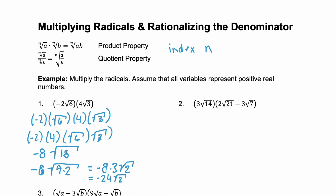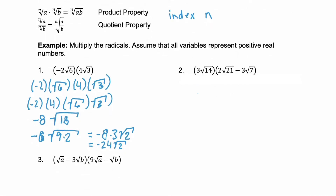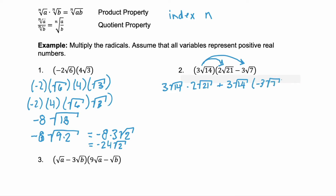Now look at example 2 where we have a monomial times a binomial — one term times two terms. We're going to distribute 3 times the square root of 14 to each of these two terms. So we have 3 square root of 14 times 2 square root of 21, plus 3 square root of 14 times negative 3 square root of 7. Remember when you're simplifying, you can multiply the coefficients together: 3 times 2 is 6, and then you have square root of 14 times the square root of 21. For the second term, 3 times negative 3 is negative 9, and then we have the square root of 14 and the square root of 7.